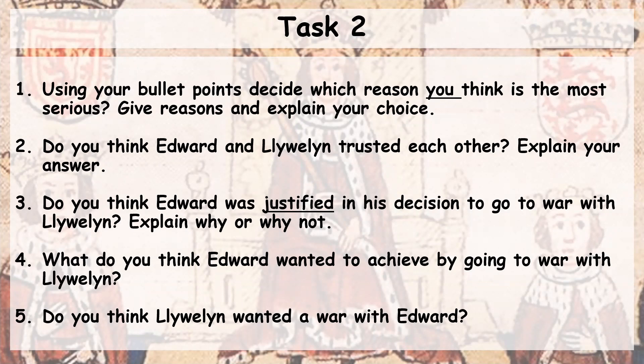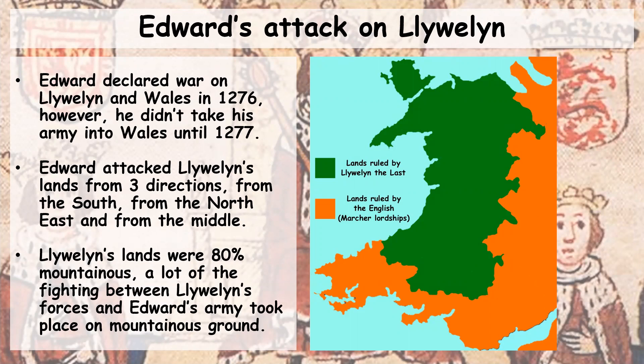You should have answered those questions now. We're going to move on to Edward's attack on Llewellyn. Edward declared war on Llewellyn and Wales in 1276; however, he didn't take his army and invade Wales until 1277. You remember this map from last lesson showing Edward's land and Llewellyn's land in Wales. Edward attacked Llewellyn's land from three directions: from the south, from the northeast, and through the centre.